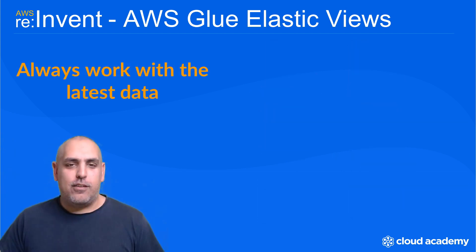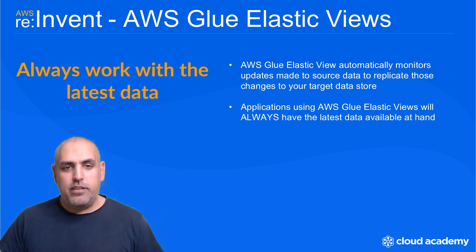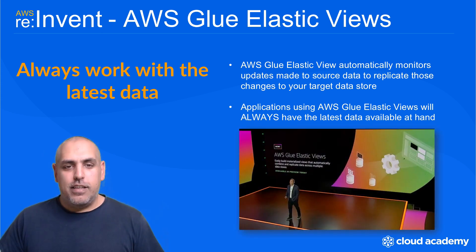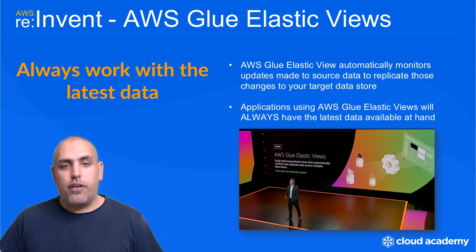One of the many benefits of this service is that it automatically monitors and checks for any updates made to your source data store so that they can be replicated to your target data store, meaning applications using AWS Glue Elastic Views will always have the latest data available. In a nutshell, this new feature will be a welcomed addition to many organisations, saving considerable time and effort when working with data sets to extrapolate data from different data stores and allowing the creation of materialized views across virtual tables.